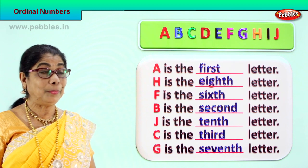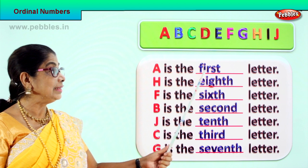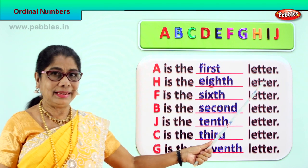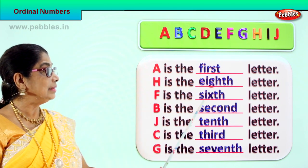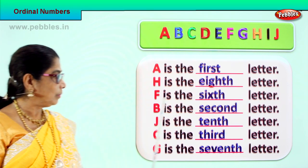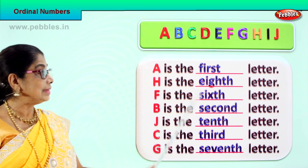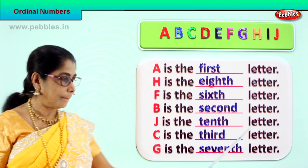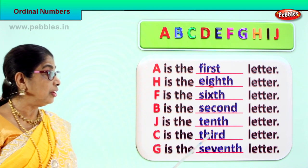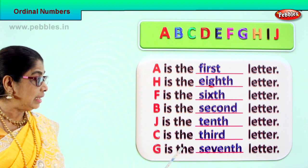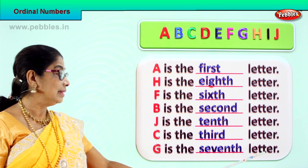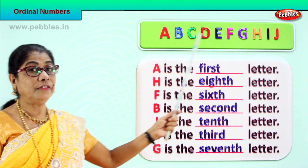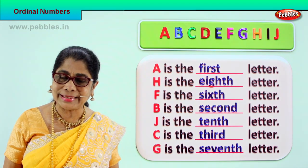Did you learn the position of each of these letters? Let's read: A is the first letter. H is the eighth letter. F is the sixth letter. B is the second letter. G is the seventh letter. C is the third letter. So we learned the ordinal position of each of these letters. Did you enjoy the exercise? Good.